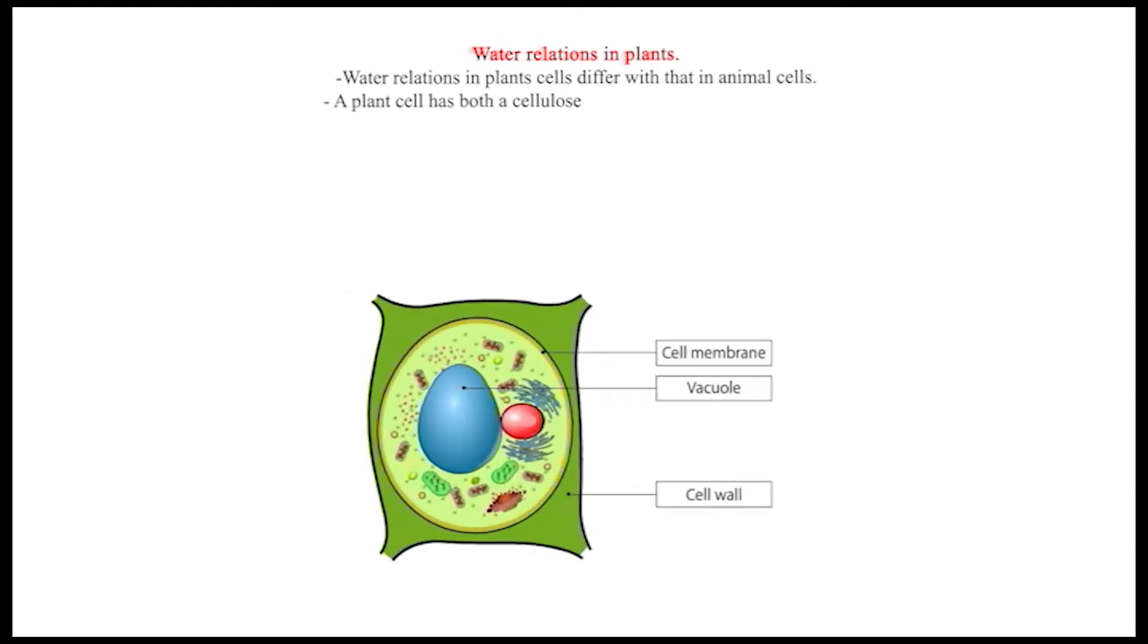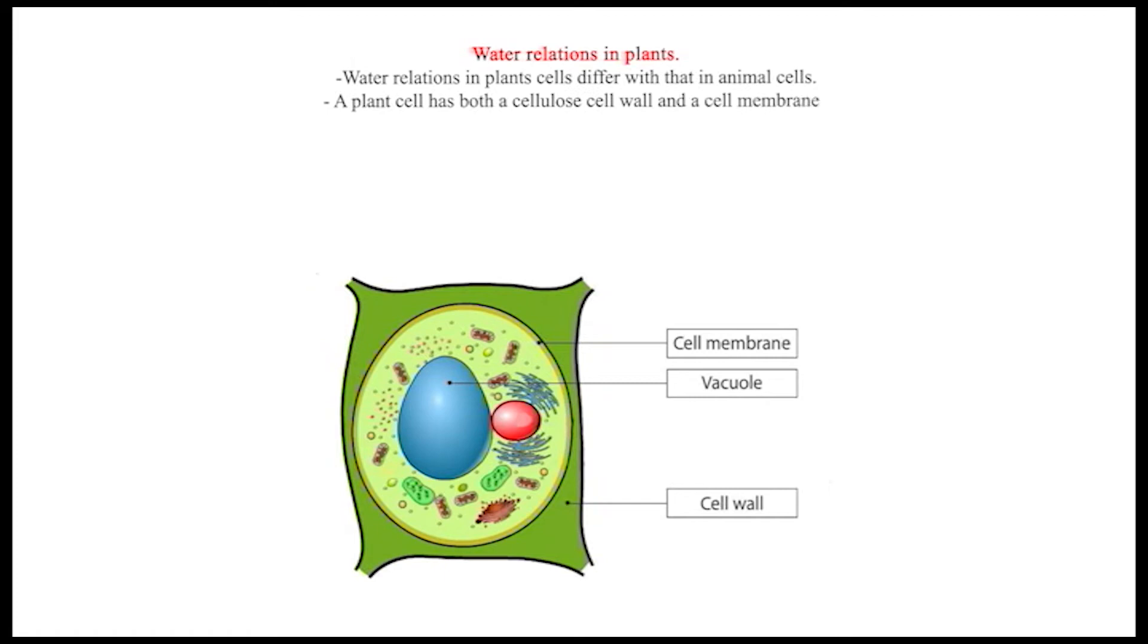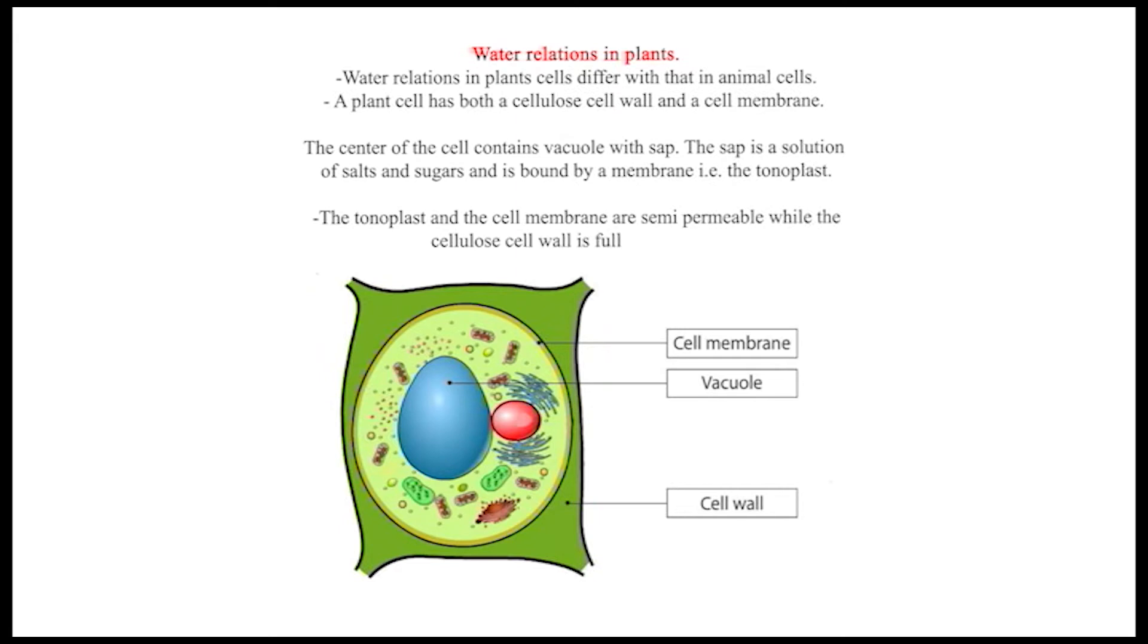A plant cell has both a cellulose cell wall and a cell membrane. The center of the cell contains a vacuole with sap. The sap is a solution of salts and sugars and is bound by a membrane, the tonoplast. The tonoplast and cell membrane are semi-permeable, while the cellulose cell wall is fully permeable.